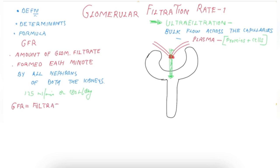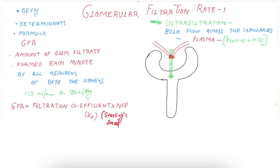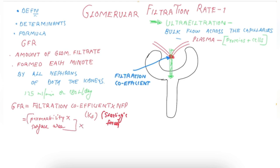GFR equals the filtration coefficient (Kf) multiplied by net filtration pressure — remember Starling's forces. The filtration coefficient Kf equals permeability multiplied by the surface area of the capillaries. Its value is calculated to be 12.5 ml per minute per millimeter of mercury, which is 400 times that of the systemic capillary.